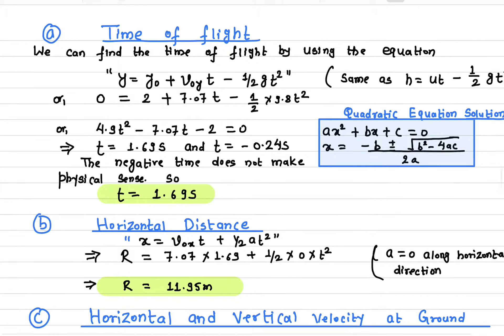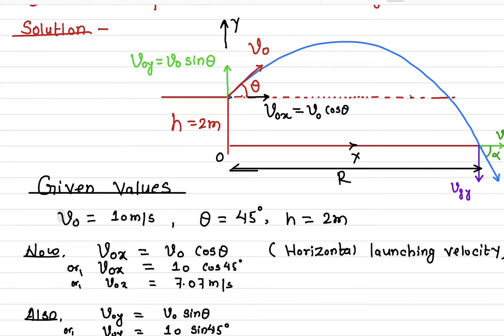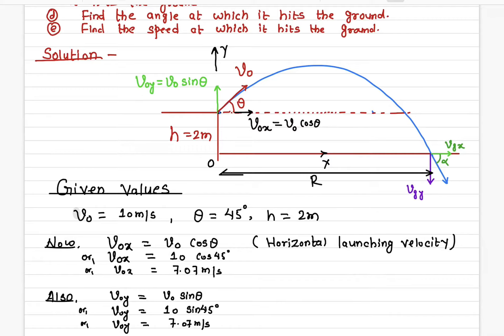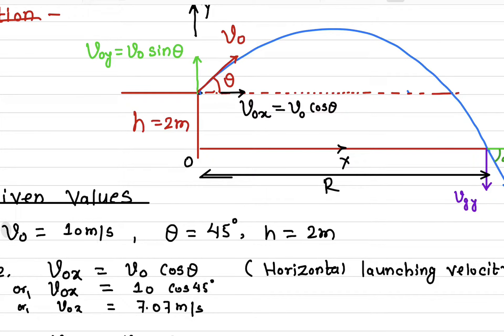Now let's find the time of flight — how long the projectile remains in the air from the launch height until it hits the ground. To find the time, we focus on the motion along the y-axis only. The ball is launched with vertical velocity v0 sine theta, reaches its peak, then comes back down. All the initial information along the y-axis is provided.